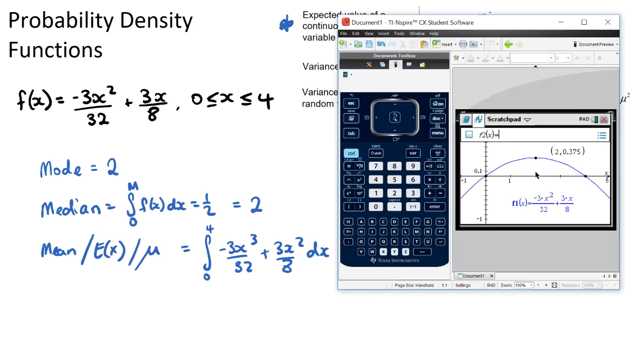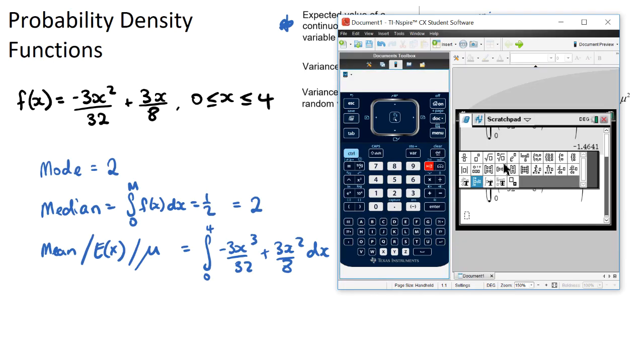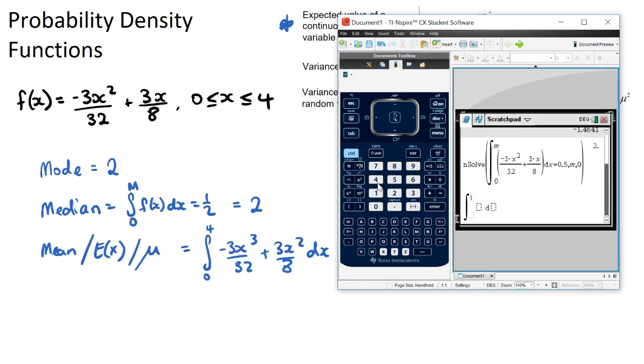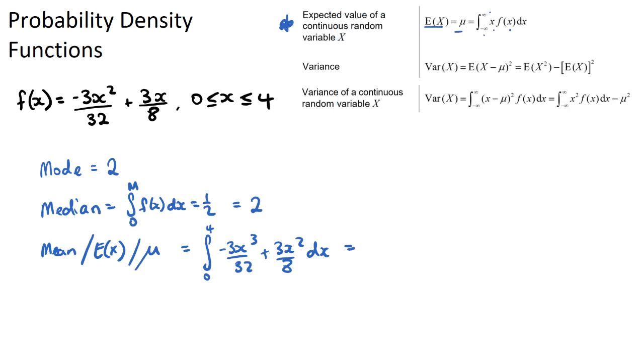We'll set up a new integral between 4 and 0. Now this was cubed and this had a squared, and we have dx. So this will be our mean, which is also 2. So if you do have a probability density function which is symmetrical, our mean, median, and mode will all be in the middle—it'll be 2.